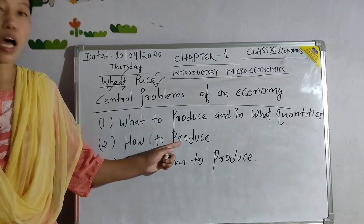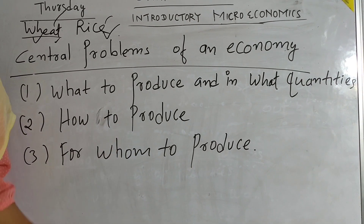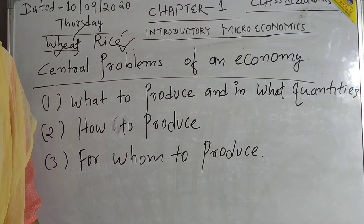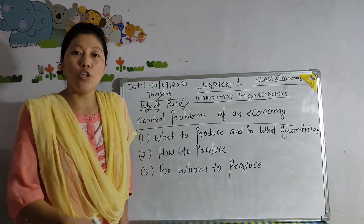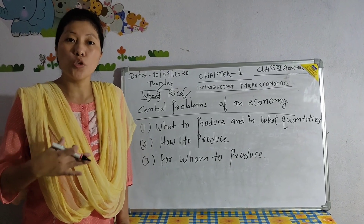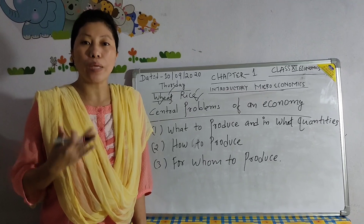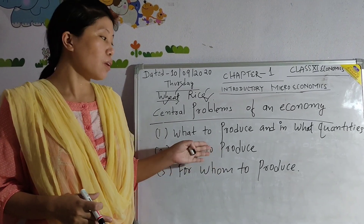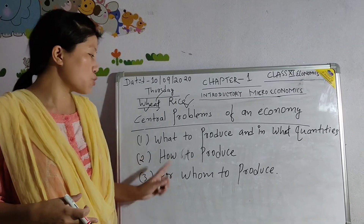The second central problem is how to produce. It is the question of choice of technique of production. A technique of production that would maximize output or minimize cost should be used. Two types of techniques are used: labor-intensive technique, mostly used in agriculture or primary sectors, and capital-intensive technique, which uses more capital, more machinery, more money, and less labor.